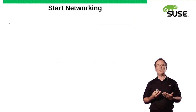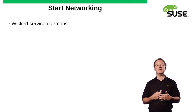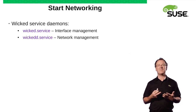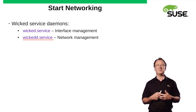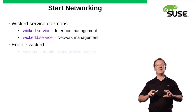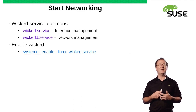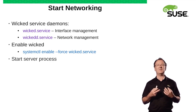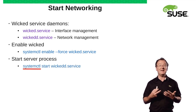So to start networking then. Wicked has a daemon. In the systemd world we've got services: we've got wicked.service for interface management and wickedd.service for network management. We'll use the systemd command systemctl to enable this: systemctl enable --force wicked.service. And then let's start up the network management daemon: systemctl start wickedd.service.